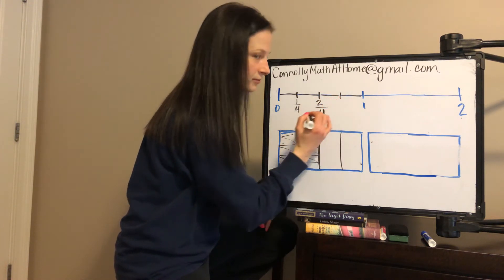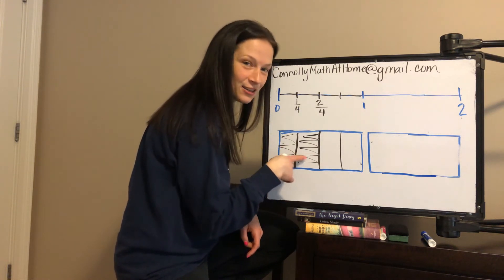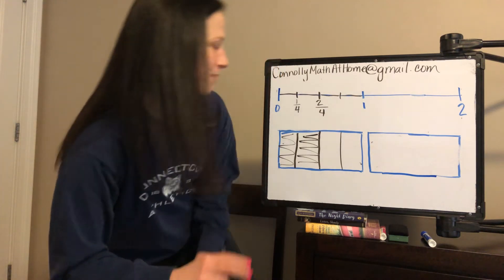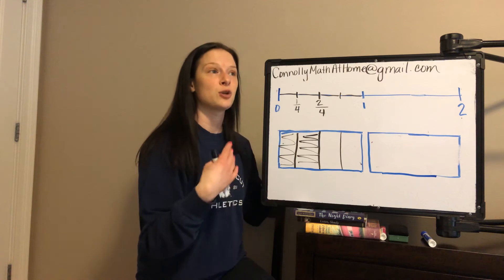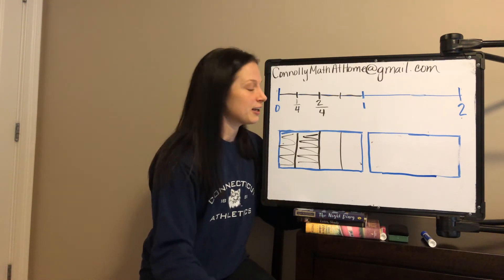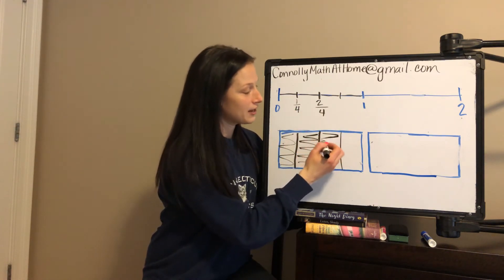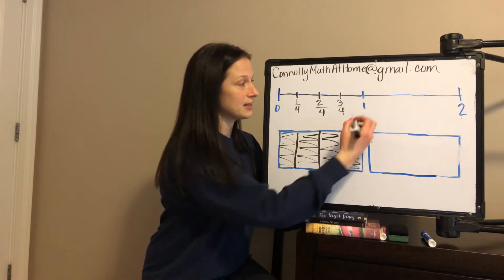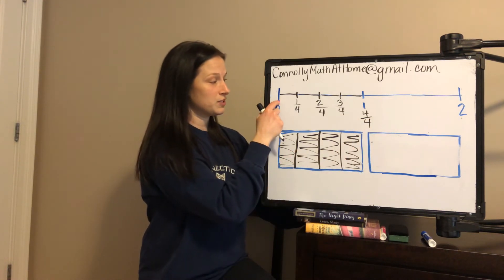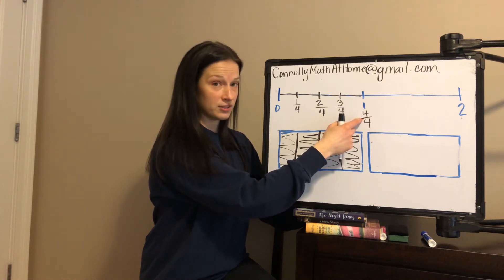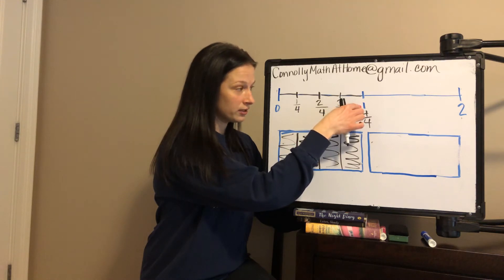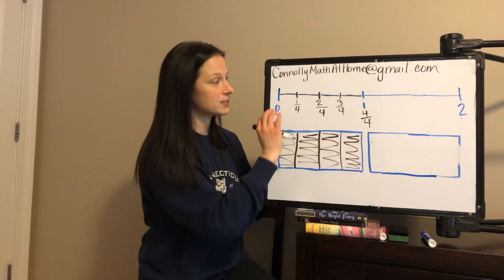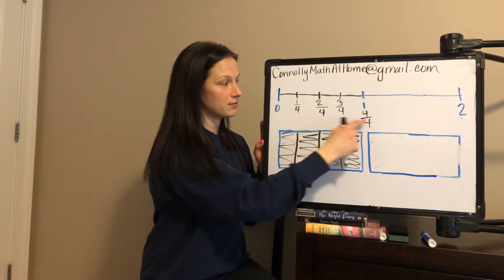If I walk the second fourth, I've gone two-fourths of a mile. Is there another way I could think about two-fourths? We're not going to bring that up in this video, but you should be thinking about it. So two-fourths, three-fourths, and if I've gone the entire mile, that's four-fourths. From zero to one, there's four-fourths. When the numerator and denominator are the same, that's equivalent to one whole. I shaded in the whole area model — one whole is shaded in, four-fourths. The distance from zero to one is the same as four-fourths.